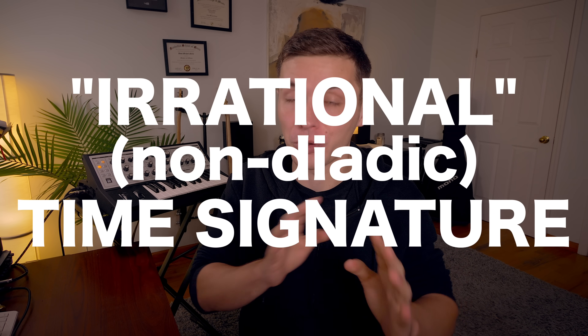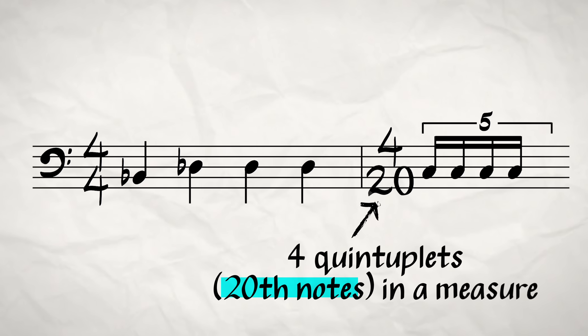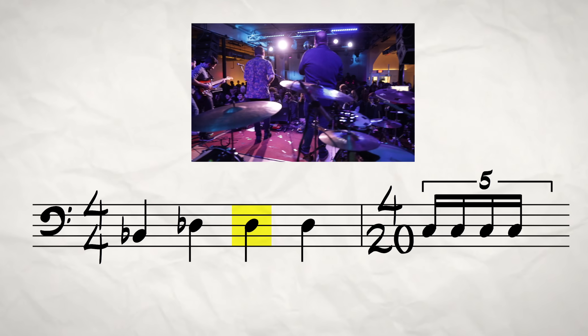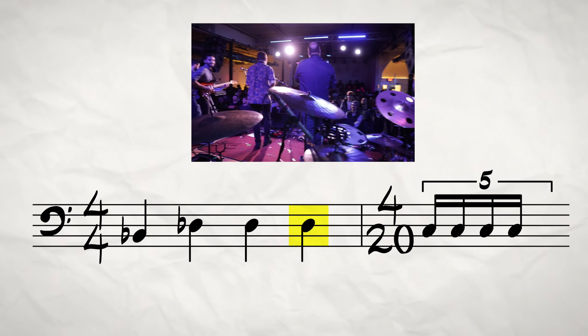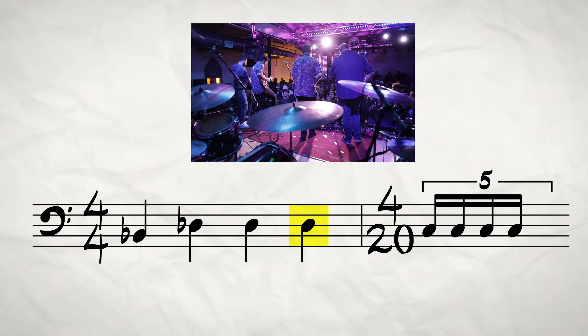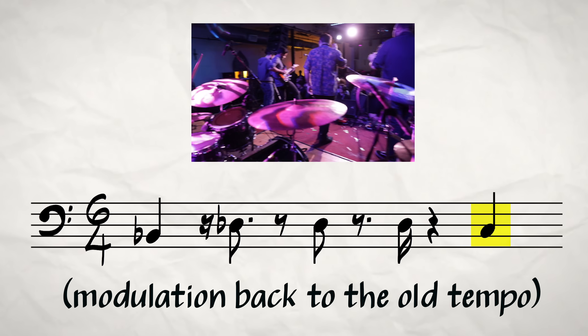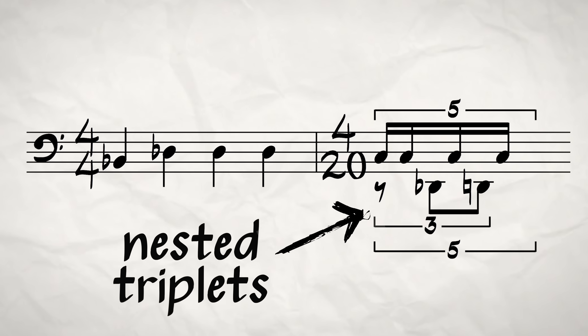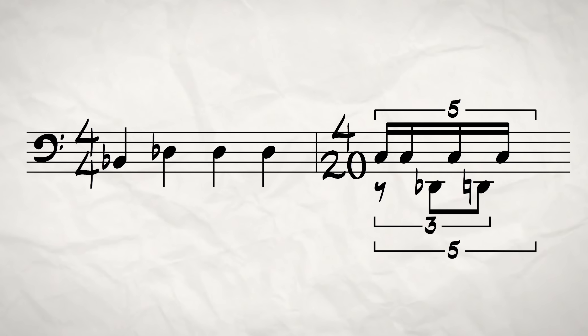4/20 is an example of an irrational, or non-dyadic, time signature. It's not really irrational in the mathematical sense — irrational in a musical sense refers to time signatures built on subdivisions which are not powers of two. In this case, it's built on a subdivision of a quintuplet, or a 20th note. You can go watch my whole video on irrational time signatures, but suffice to say they are fairly rare in their application. It just so happened that this particular instance of metric modulation required a 4/20 time signature to adequately describe what was happening. The whole thing is actually complicated a little further by what bass player Mark Minugian was doing within that measure of 4/20 — he was playing triplets nested within those four quintuplets, leading to the downbeat of the whole pattern. It's kind of crazy, actually.